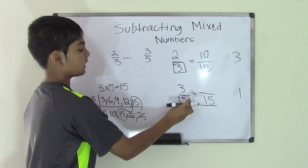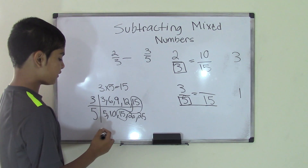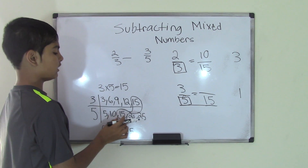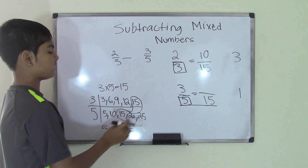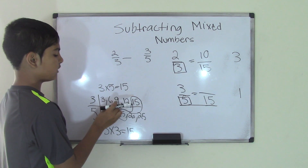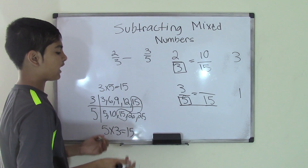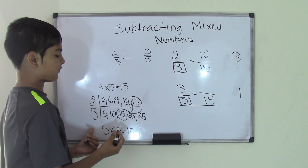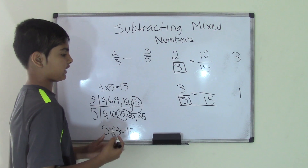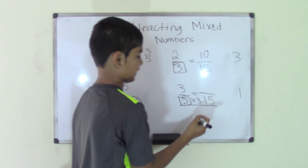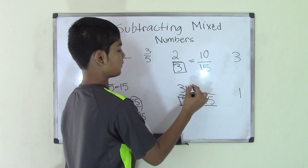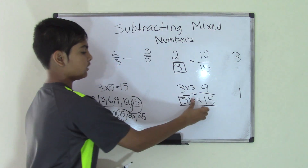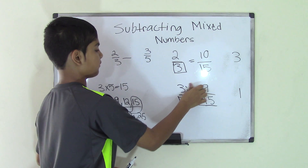Now for 3/5 — what times 5 equals 15? We know that 5 times 3 is 15. The number 15 comes third in the times table of 3, and third in the times table of 5. So we multiply the numerator 3 by the same number 3: 3 times 3 is 9. So the new numerator for the fraction 3/5 is going to be 9.